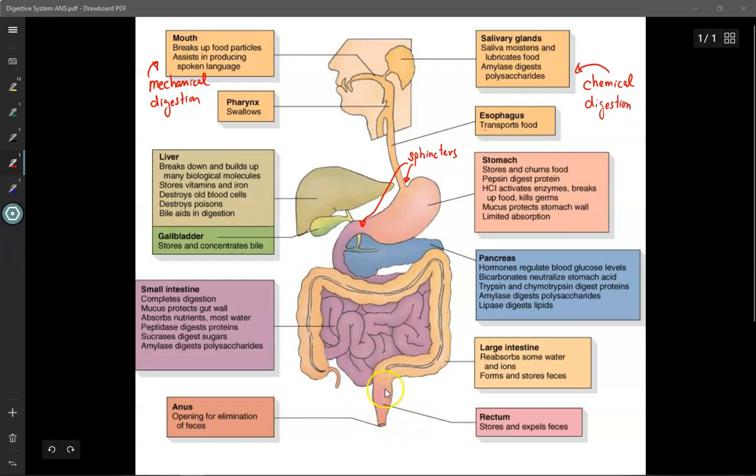Now, at the end of the digestive tract, we have the rectum. This is where feces is stored. When the rectum is full, it sends a signal to the brain telling you to go to the washroom. At that point, the anus relaxes and the rectum pushes and feces comes out. And that, ladies and gentlemen, is our digestive system.